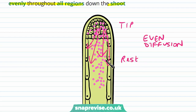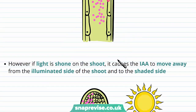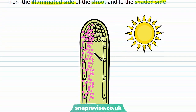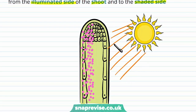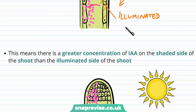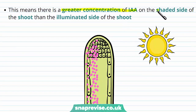However, if there is light shining on the shoot from one direction, it causes the indole acetic acid to move away from the illuminated side of the shoot and travel to the shaded side. So the auxin was diffusing evenly before, but when the sun points mainly on one side of the plant — the illuminated side — the IAA moves to the shaded side. This is the first step in the mechanism, causing a greater concentration of IAA on the shaded side than on the illuminated side.